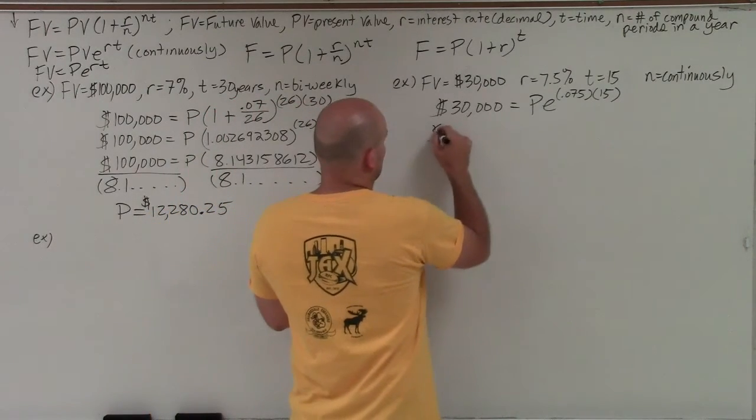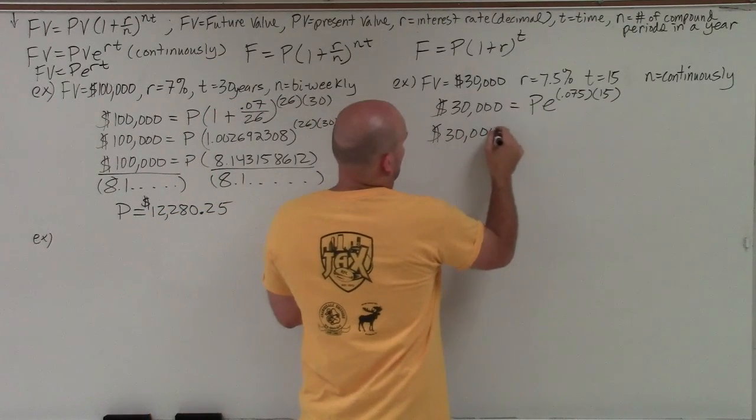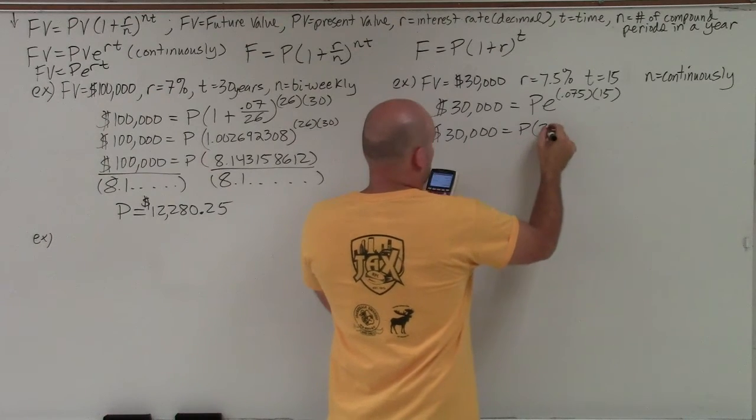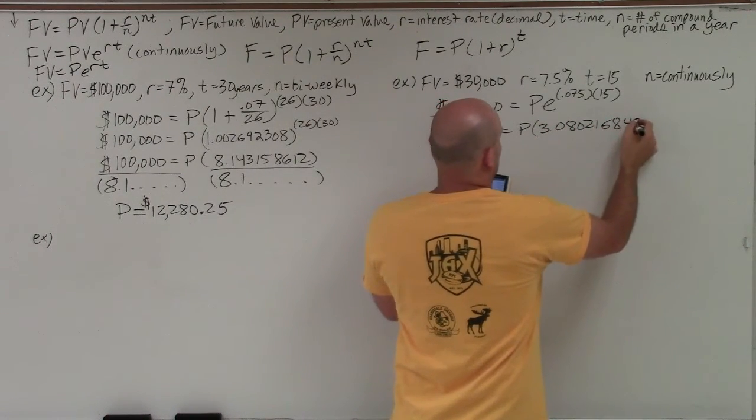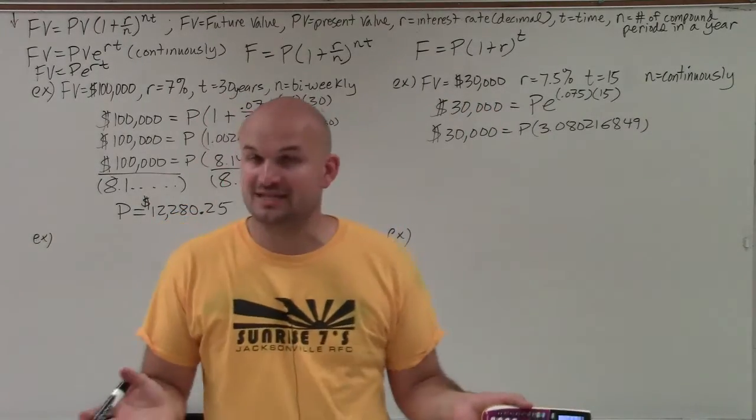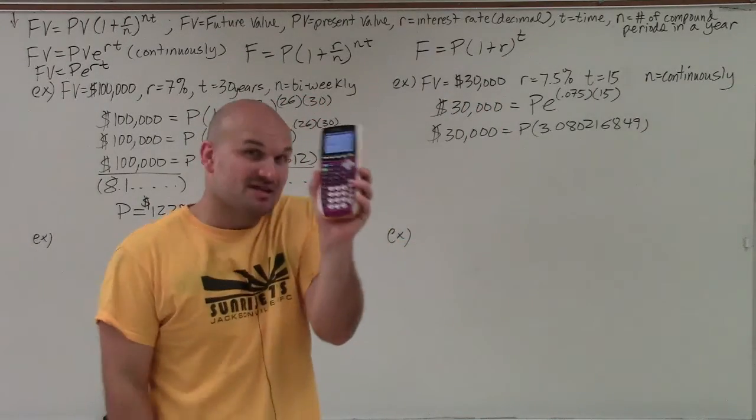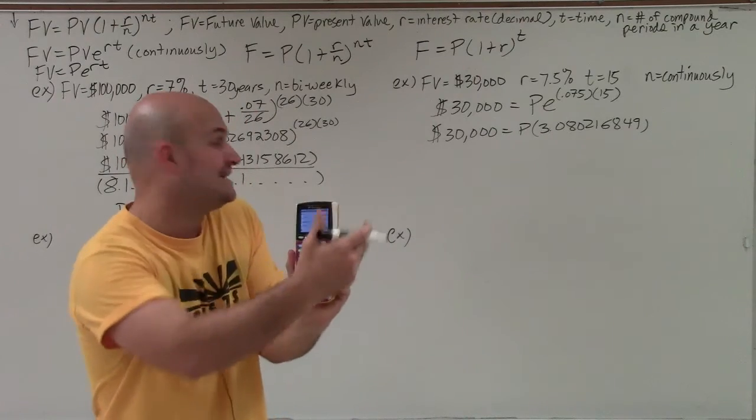And that gives me a value of 3.080216849. Again, this is my calculator only approximating to the ninth digit. But the rest of all those numbers are inside the calculator. It's only displaying nine digits.